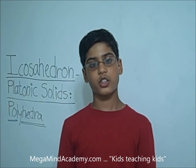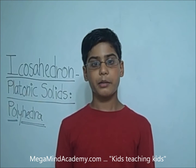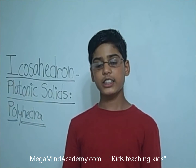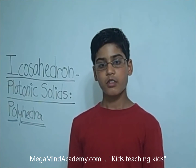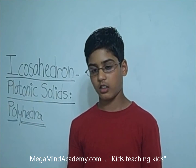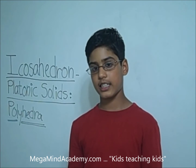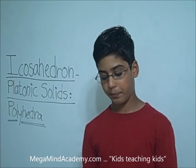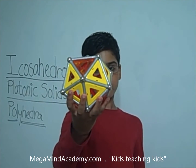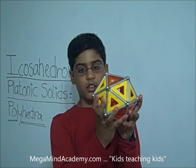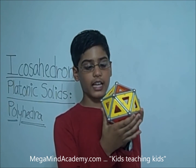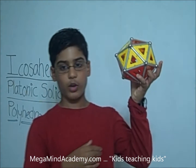An icosahedron is a very unique and beautiful three-dimensional figure. It is unique because if you look at it from any angle, you can see that it has a pentagonal web. An icosahedron looks like this. As I said before, if you look at it from any angle, you can see a pentagonal web.